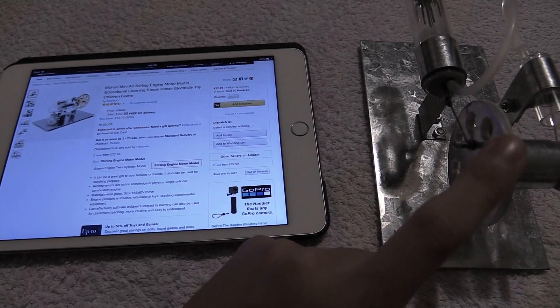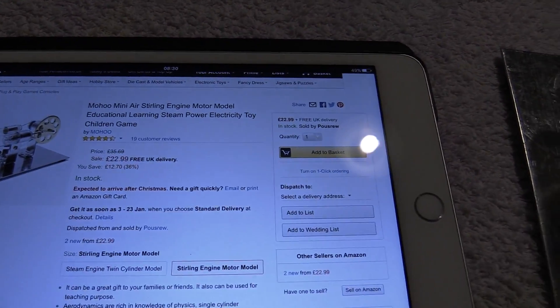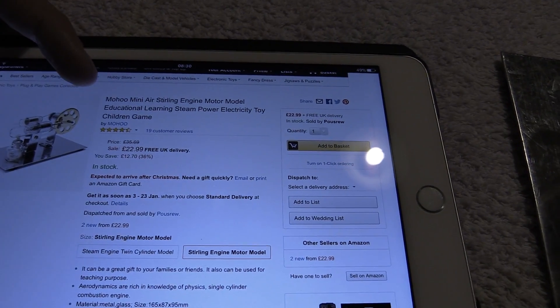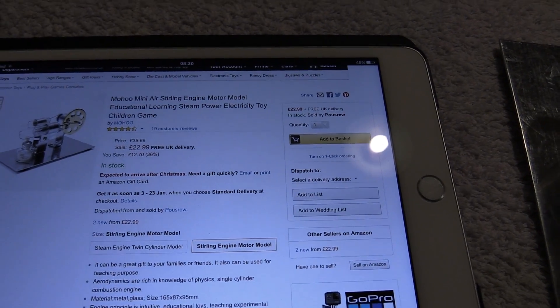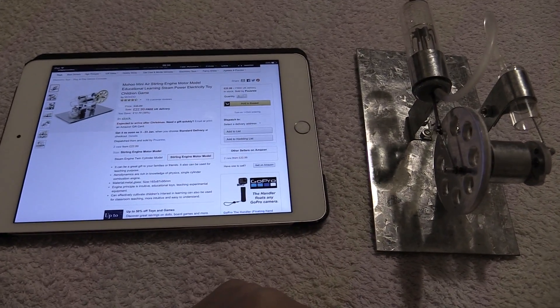I wish it came with instructions, but it's not really that big a deal. If you want to find it yourself, you can go on Amazon and you can see it's called the Muhu Mini Air Sterling engine. So yeah, if you enjoyed this video, please give a thumbs up and subscribe. Thanks for watching.